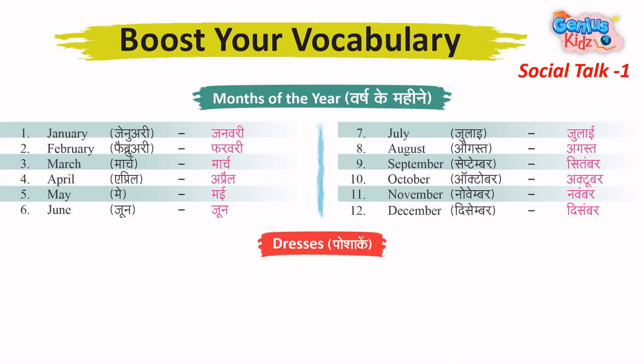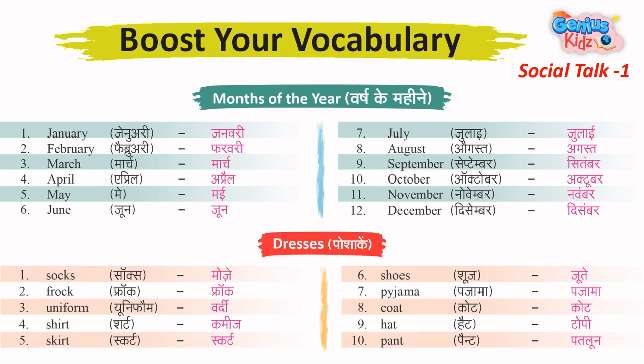Dresses – Poshak. 1. Socks – Mose. 2. Frog. 3. Uniform – Vardi. 4. Shirt – Kameez. 5. Skirt.